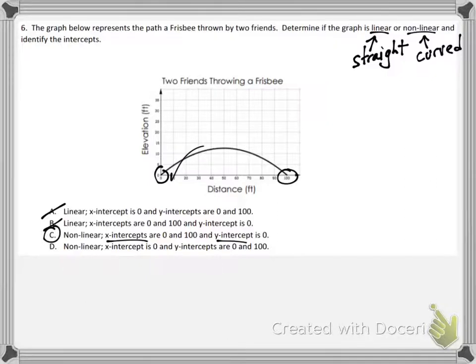Choice D is wrong because it says the x intercept is 0, and that is excluding the x intercept of 100 that is all the way over here. So it can't be choice D.